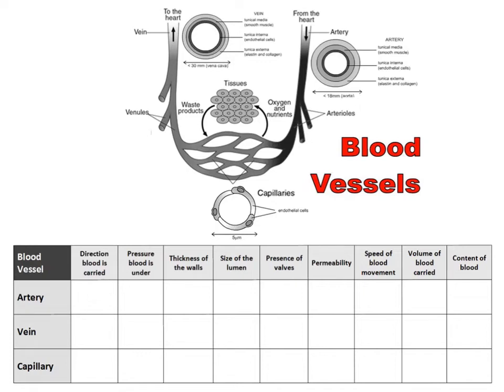Hello everyone. In this video we're going to be looking at blood vessels and we're going to look at the structure of arteries, veins and capillaries. And then we're going to compare the three blood vessels using the table at the bottom. So let's look at this image we've got at the top. It's a very simplified diagram but it's just to show the connection between these three blood vessels. These blood vessels are described as tubular-like organs, and with the heart they form what's called the circulatory system.